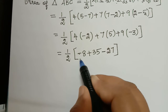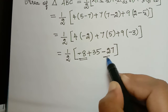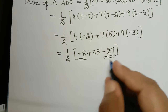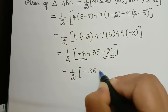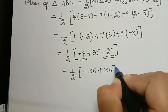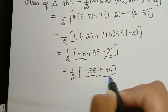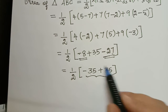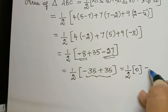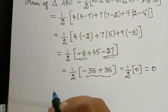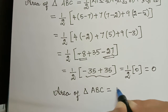Now we group all the negative terms and the positive terms. When we add negative 8 and negative 27 we get negative 35. So that equals one-half multiplied with (negative 35 plus 35). So minus 35 plus 35 equals zero. Therefore that equals one-half multiplied with zero, which gives us zero.